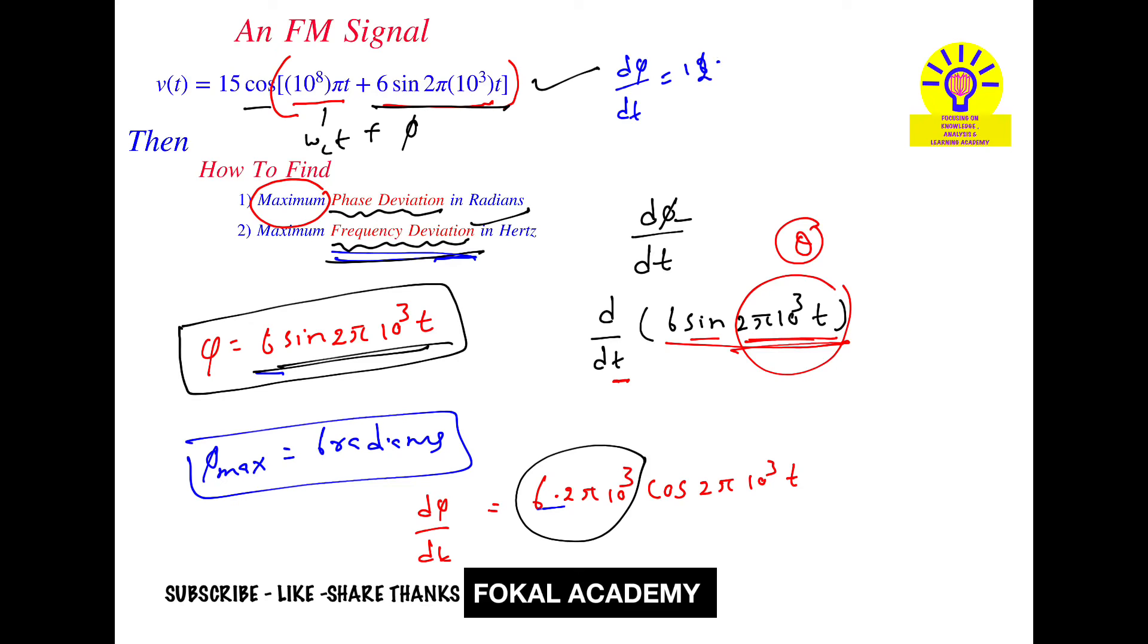But here we are asking in Hertz, so it's in radians. That is ω. Since ω can be written as 2πf, so 2πf = 2 × π × 10³. Here π cancels.